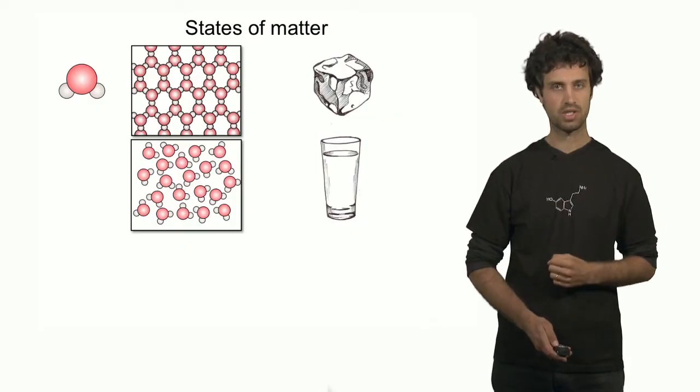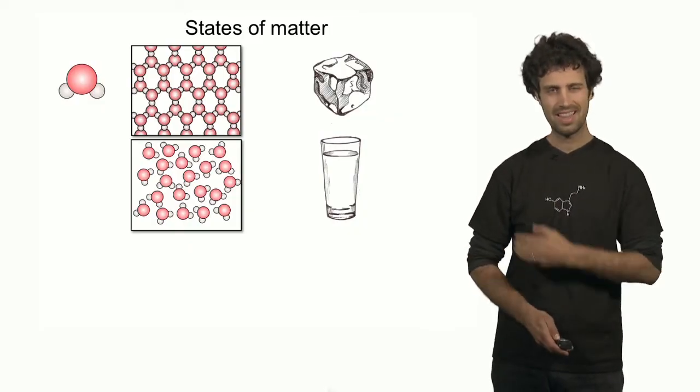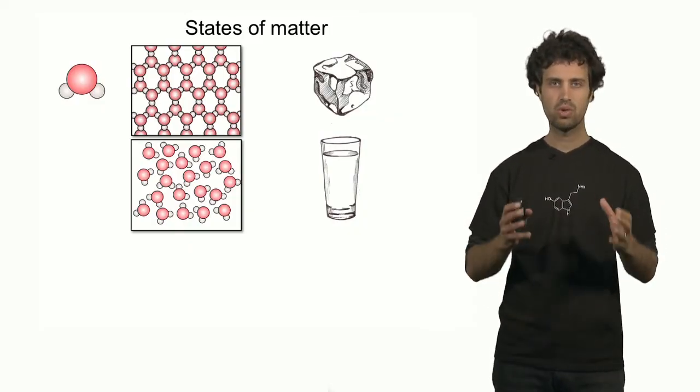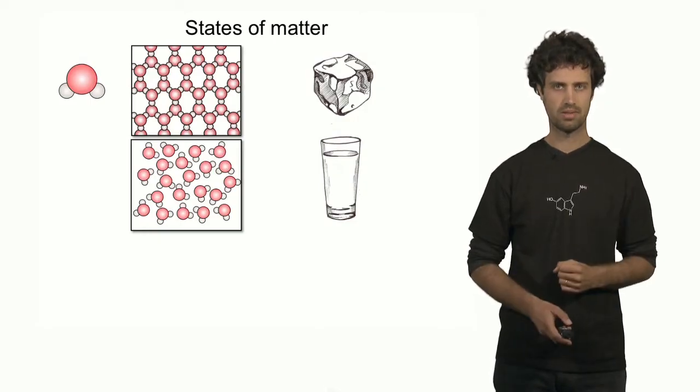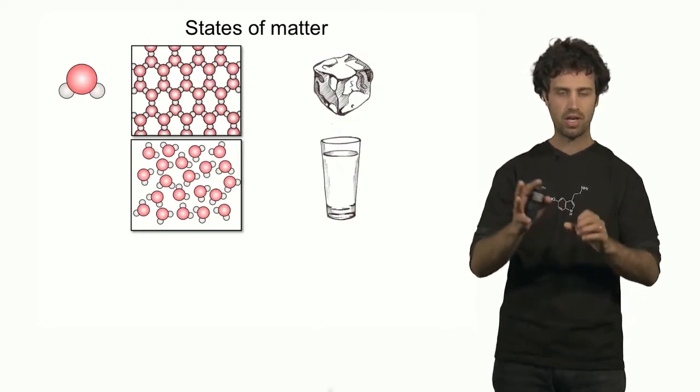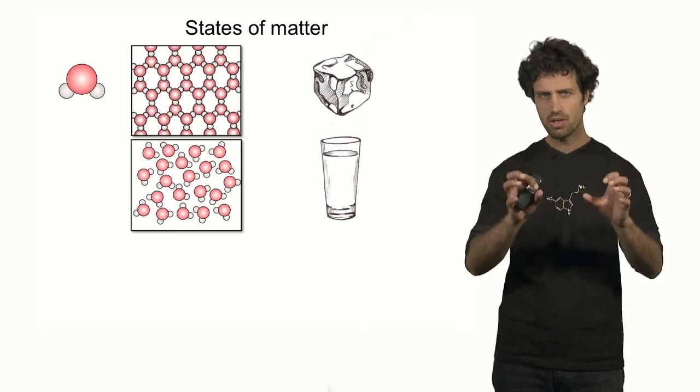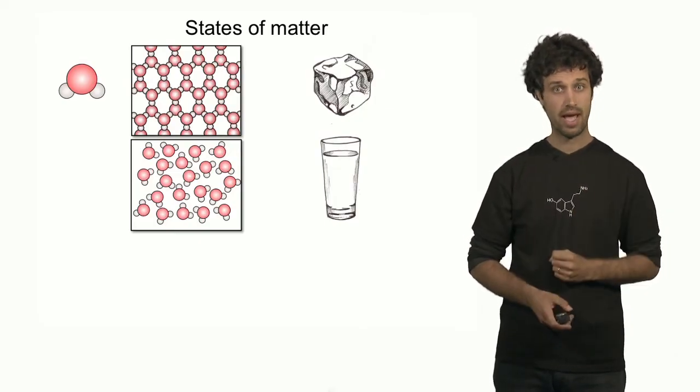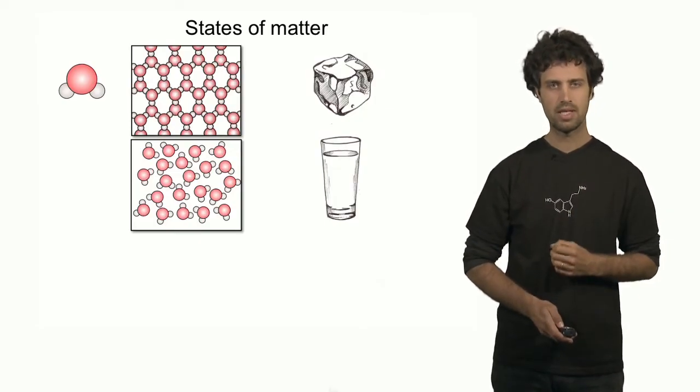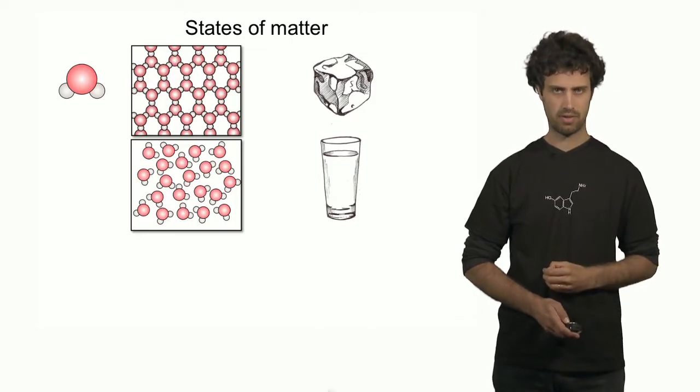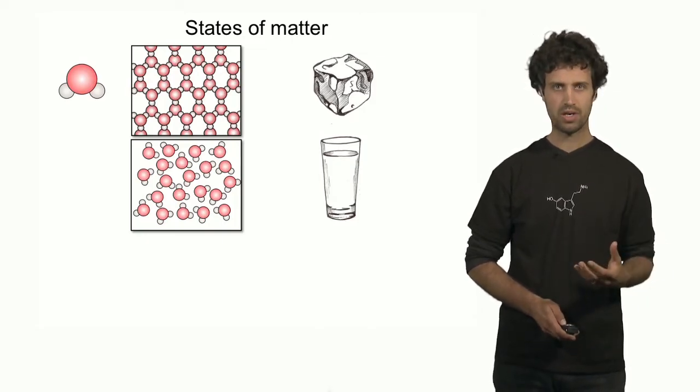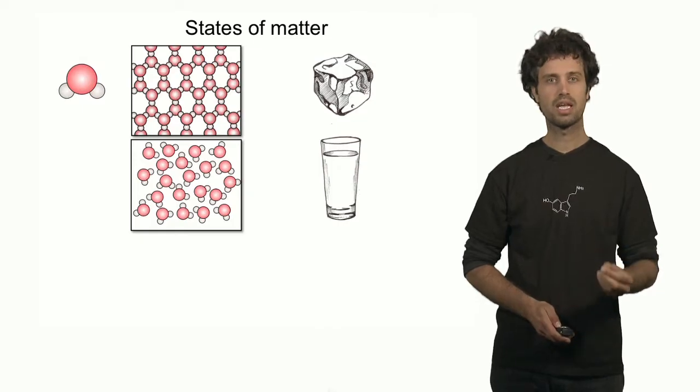Now here is another example in which the molecules can organize themselves. These are the same water molecules, but they do not form a lattice anymore. Here they are freely floating around. However, they are still together quite closely. And they still interact quite strongly. This is called the liquid state of the material. In the case of water, we call the liquid state simply liquid water.